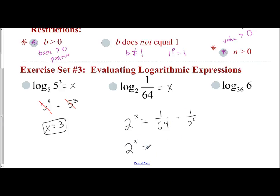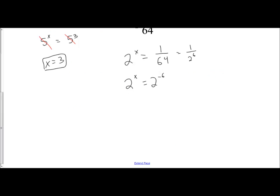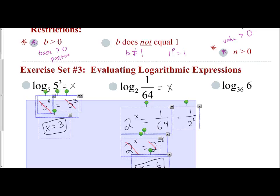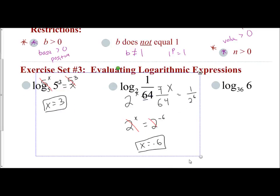So 1 over 64 is really 1 over 2 to the 6th, which means 2 to the negative 6th. You have the same base, cross them out, set the exponents equal. x equals negative 6. So we're practicing this converting from logarithmic to exponential form to assist us with evaluating our expressions involving logarithms.